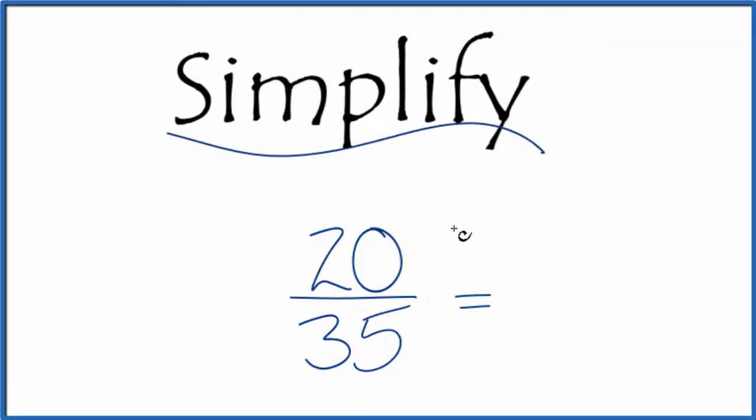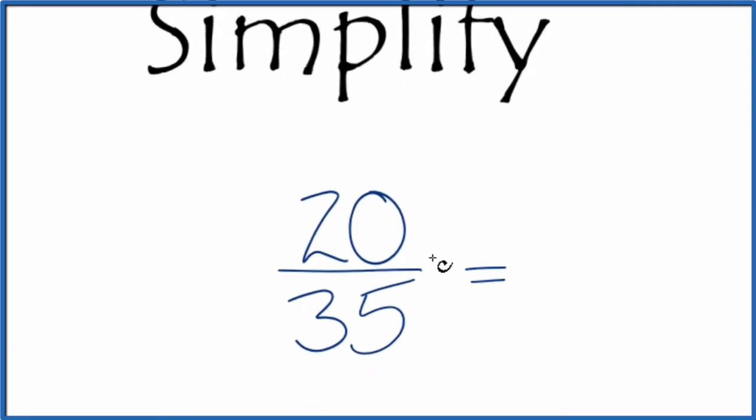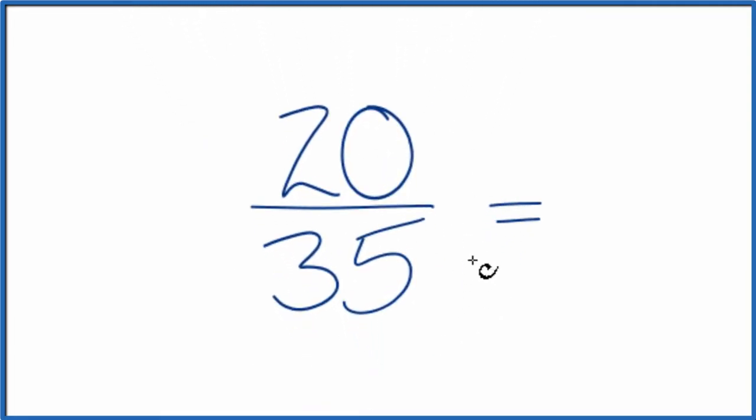If you need to simplify the fraction 20 over 35, here's how you do it. What we're trying to do is find another fraction that is equivalent and has the same value as 20 over 35; it's just that we've reduced it to the lowest terms.